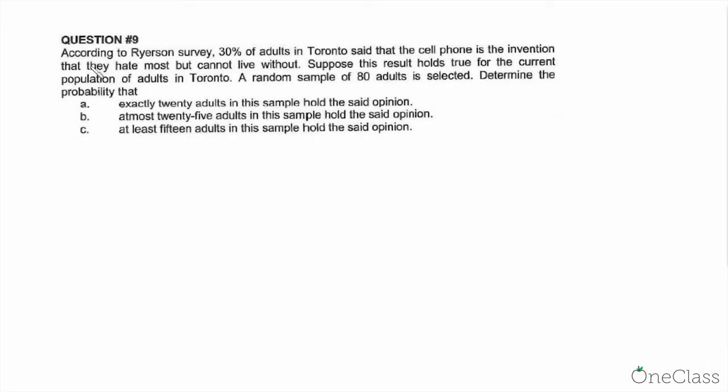Let's take a look at a practice question from a previous exam. According to Ryerson's survey, 30% of adults in Toronto said that the cell phone is the invention that they hate most but cannot live without. Suppose the result holds true for the current population of adults in Toronto. A random sample of 80 adults is selected.